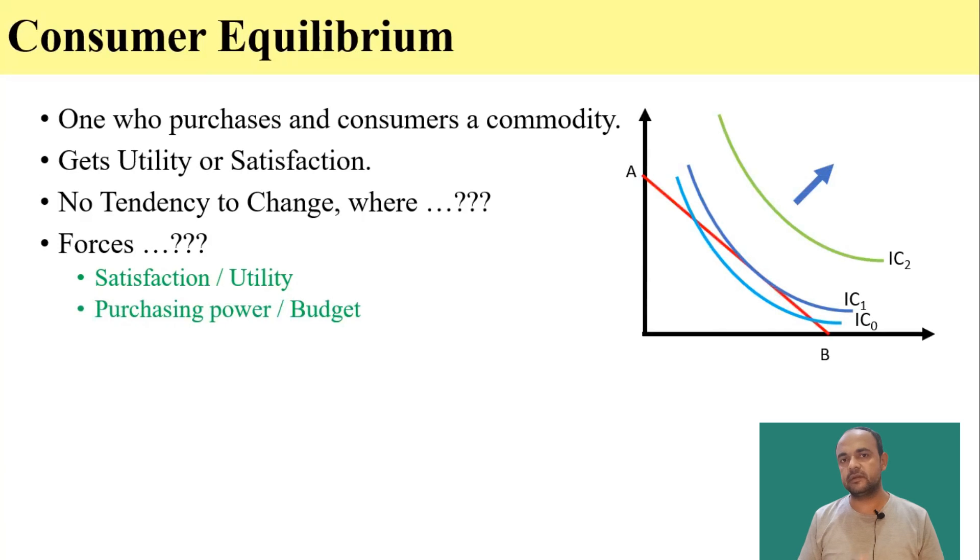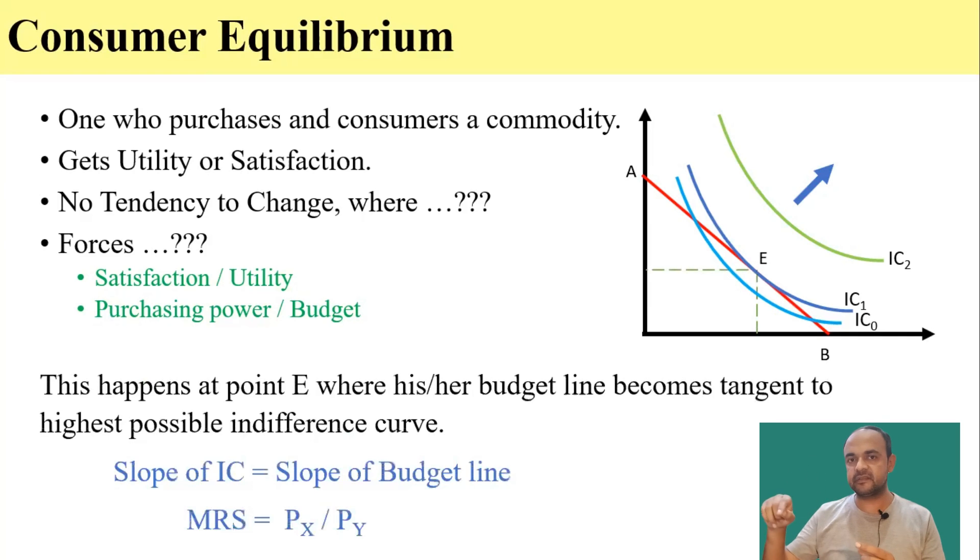Therefore, the consumer will tend to maximize his or her satisfaction keeping himself or herself within the limits set by the budget line. So the consumer will be in equilibrium, that is he or she will be maximizing his or her utility at a point where indifference curve is tangent to the budget line.